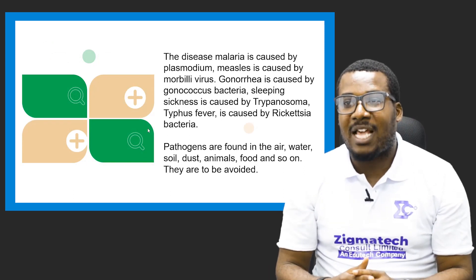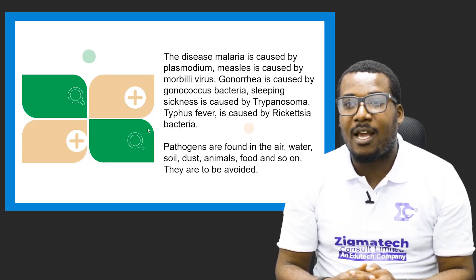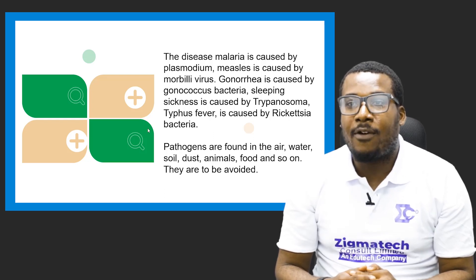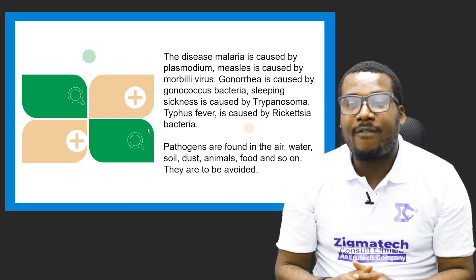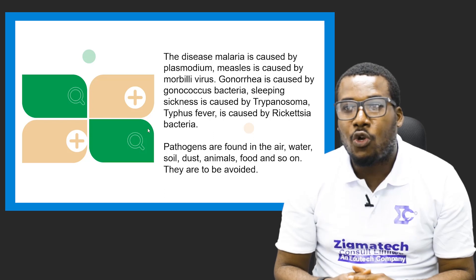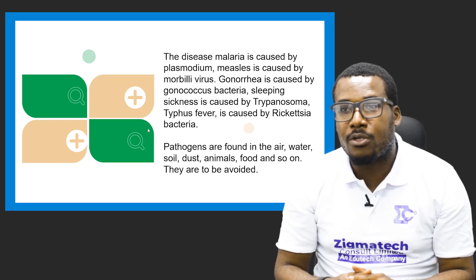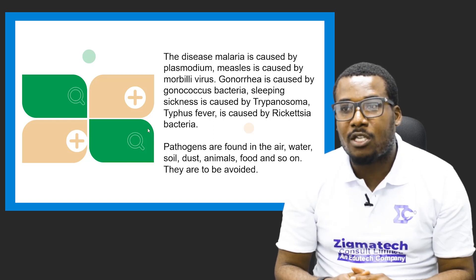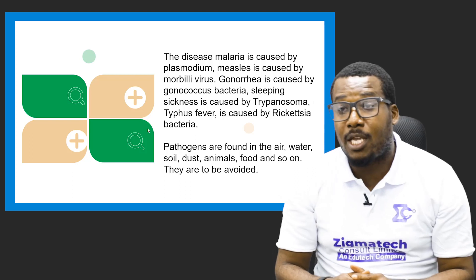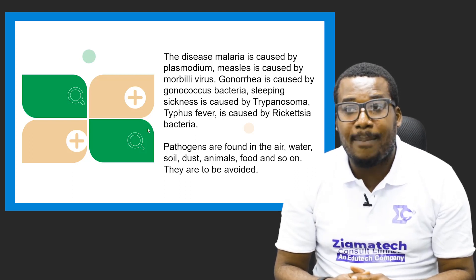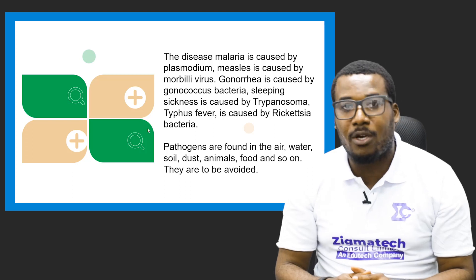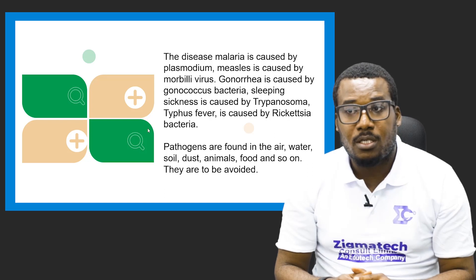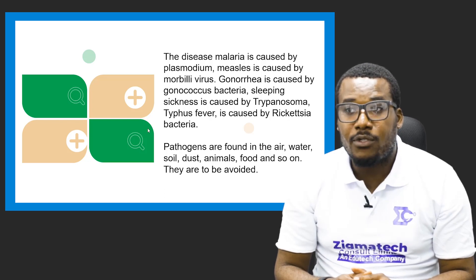The disease malaria is caused by plasmodium, which is delivered to us by the Anopheles mosquito. Measles is caused by mobile virus. Gonorrhea is caused by gonococcus bacteria. Sleeping sickness is caused by trypanosoma. Typhoid fever is also caused by a specific pathogen. So many of these diseases are found almost everywhere in our ecosystem — in the air, water, soil, dust, animals, food, and so on.